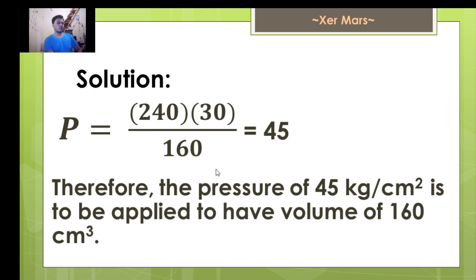And our conclusion: therefore, the pressure of 45 kilogram per square centimeter is to be applied to have volume of 160 cubic centimeter. Take note that in stating our final answer, don't forget the unit, like kilogram per square centimeter.